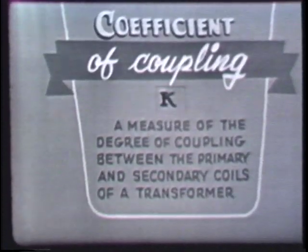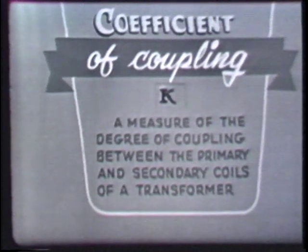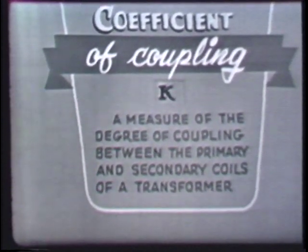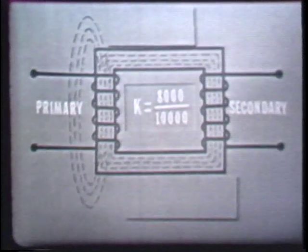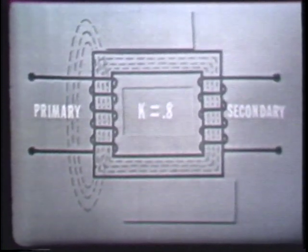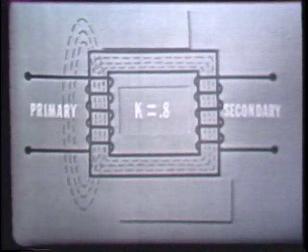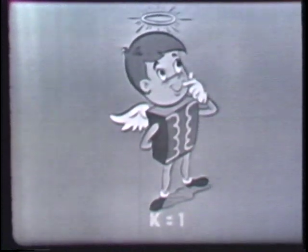The coefficient of coupling, which is represented by the letter K, is a measure of the degree of coupling between the primary and secondary coils of a transformer. The coefficient is obtained by dividing the number of magnetic lines cutting the secondary coil by the number of magnetic lines actually produced by the primary coil. For example, if the primary produced 10,000 magnetic lines but only 8,000 lines cut the secondary, then the coefficient of coupling would be equal to 0.8. If all magnetic lines cut the secondary, K would equal 1.